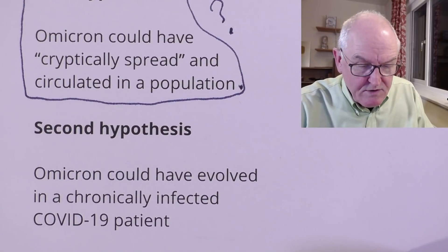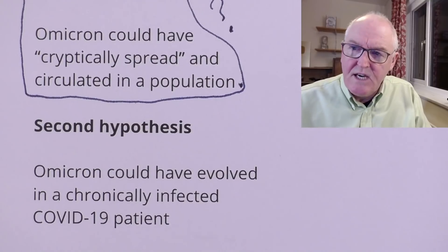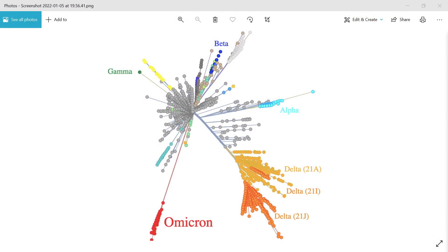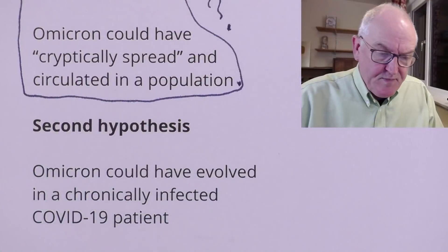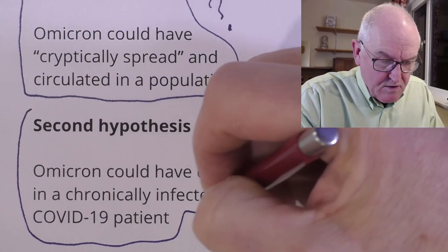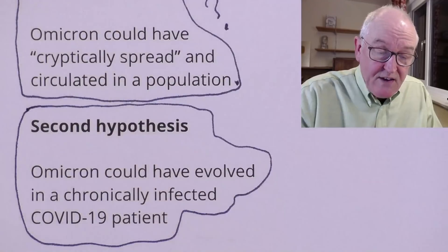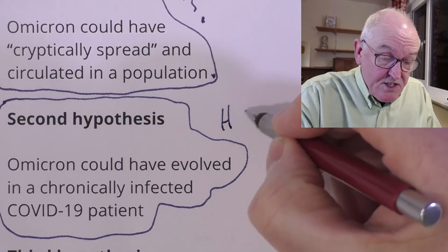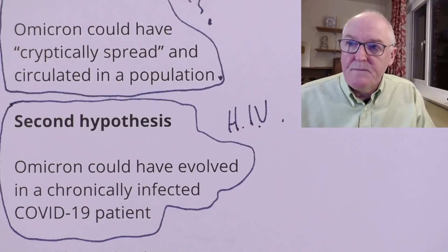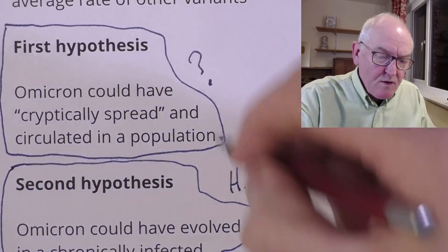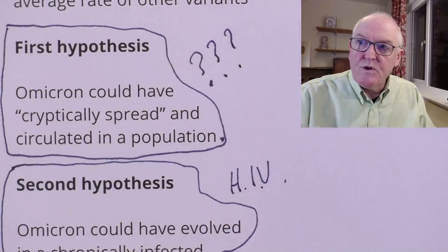The second hypothesis is that Omicron could have evolved in a chronically infected person with COVID-19. If someone is chronically infected and has a compromised immune system, the virus keeps evolving to evade the limited immune response that person can generate. So it could have evolved in a chronically infected person — perhaps someone with HIV and chronic immunosuppression — in Africa. That is possible.